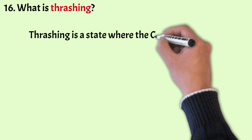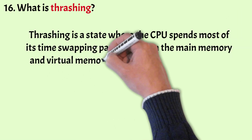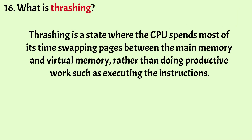What is thrashing? Thrashing is the state where the CPU spends most of its time swapping pages between main memory and virtual memory rather than doing productive work such as executing instructions. A system can detect thrashing by evaluating CPU utilization. It occurs when the number of pages exceeds the number of frames in memory, leading the CPU to address too many page faults and remain in a constant state of paging.